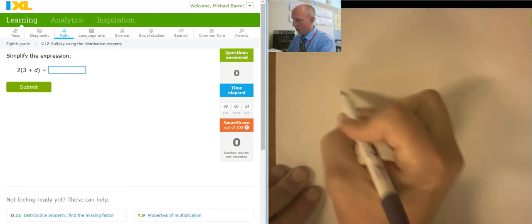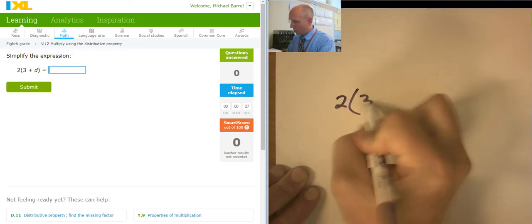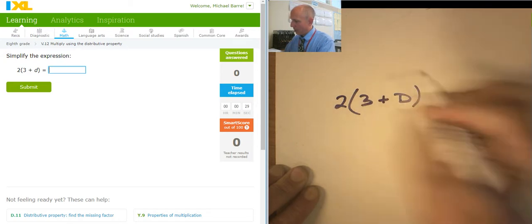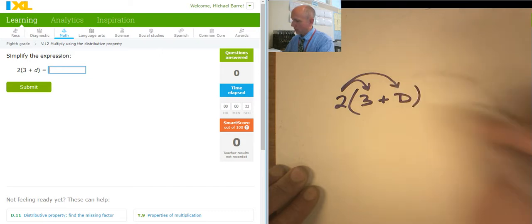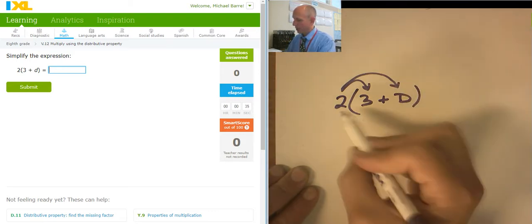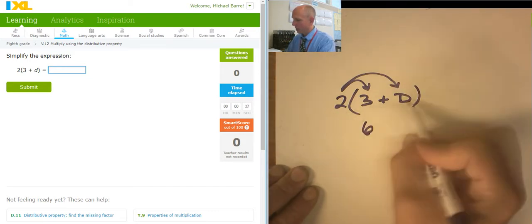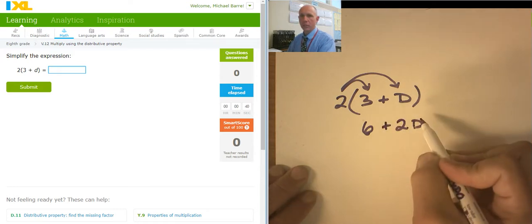I'm going to distribute 2(3+D). And in my class, I call this jumping the wall or distribution. So, 2 times 3 is 6, 2 times D is 2D. So, 6 plus 2D.